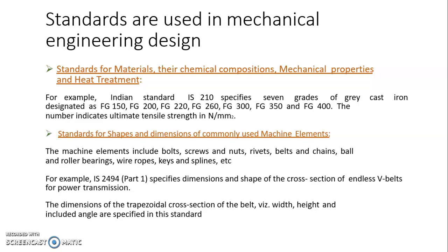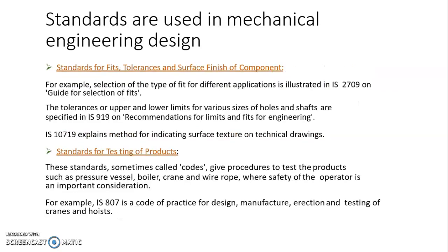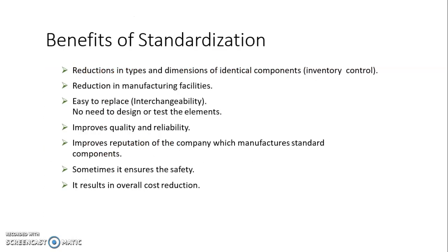There are various examples of standards: standards for materials, standards for shapes and dimensions, standards for fits, tolerances, and surface finish, and standards for testing of products. The benefits of standardization include reduction in types and dimensions of identical components, reduction in manufacturing facilities needed, easy replacement and interchangeability, improved quality and reliability, improved company reputation, ensured safety, and overall cost reduction.